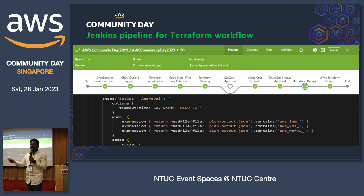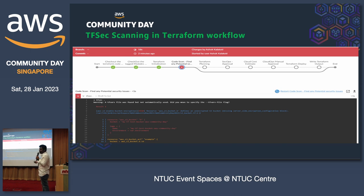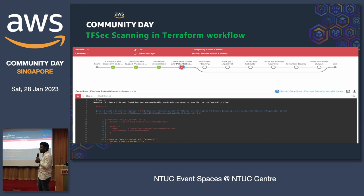This is the TFSEC scanning tool which does code scanning and flags any vulnerabilities. One screenshot shows an S3 bucket missing bucket encryption, which is mandatory to have. I purposely left it missing — so it flagged out, and the pipeline itself won't proceed until you fix the issue. It's a hard gate for your pipeline. Even if a developer takes code from GitHub and adds it to the repository, this gets flagged out.